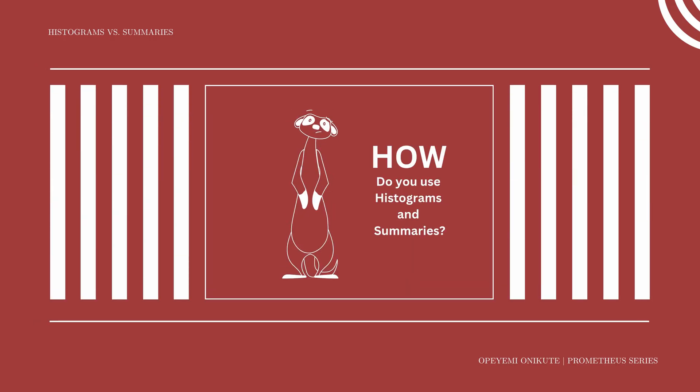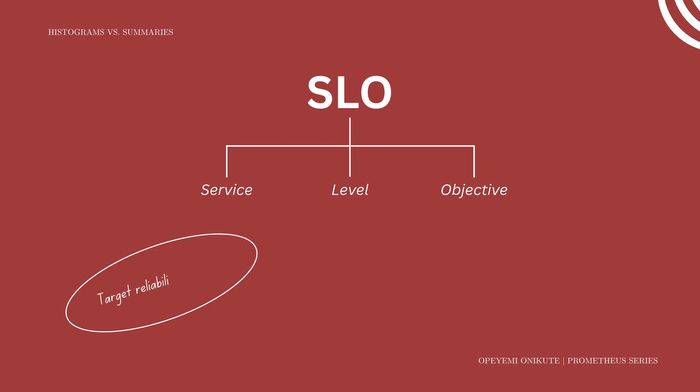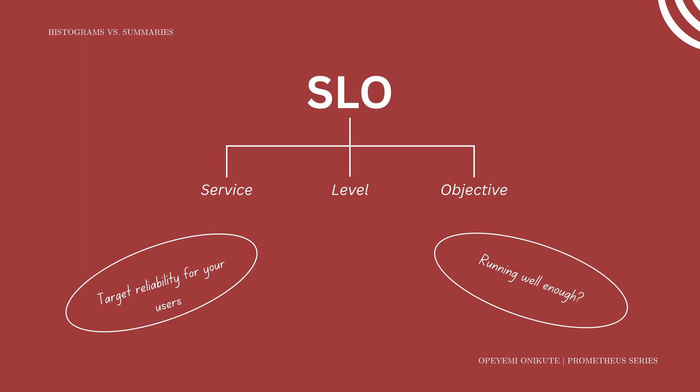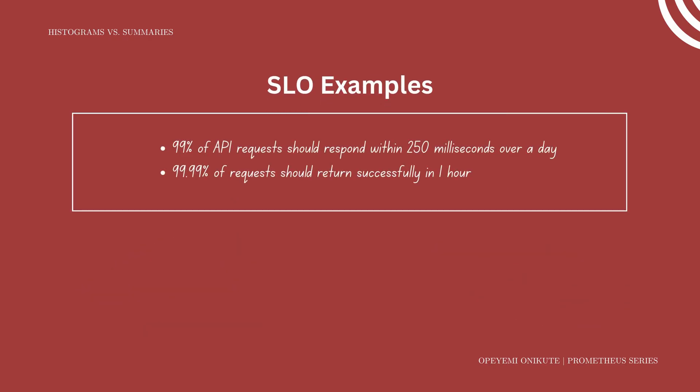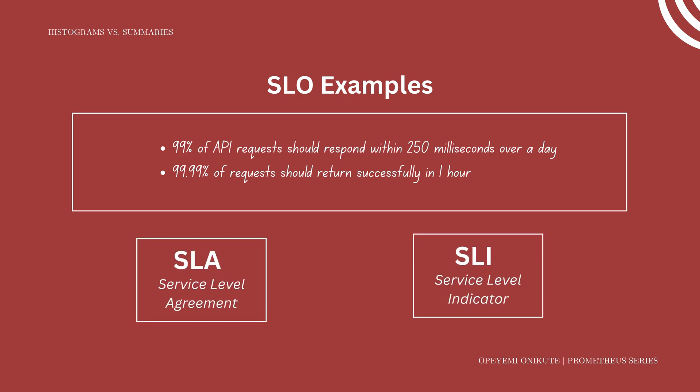So you understand histograms and summaries, but how do you use them? Let's say you have a product with a strong user base — your app might be up, dashboard green, and alerts quiet, but your users could still be miserable. This is where a good SLO comes in. SLO stands for service level objective: a target level of reliability that you aspire to deliver to your users. It is about whether the system is running well enough for users to have a good experience. You will generally define SLOs over a time window — for example, 99% of API requests should return within 250 milliseconds over a day, or 99.99% of requests should return successfully in one hour.